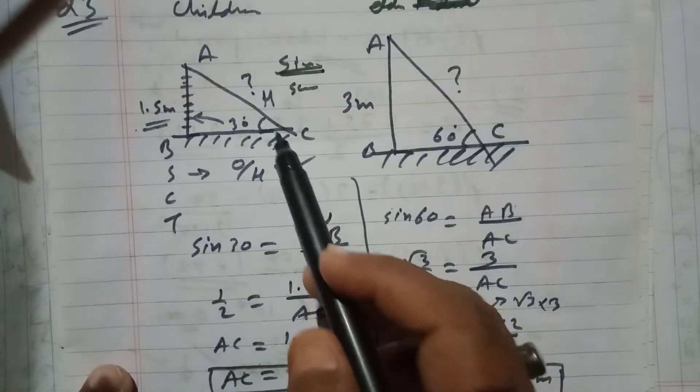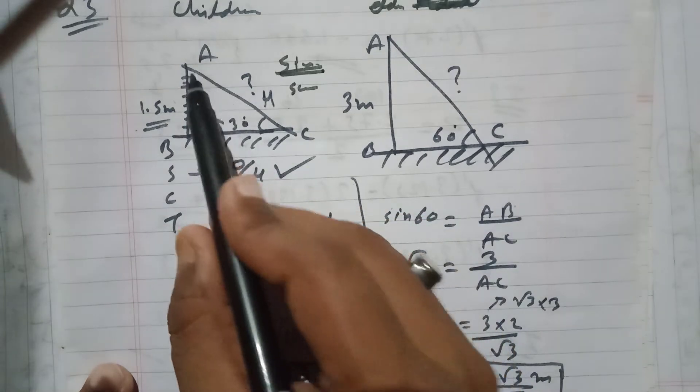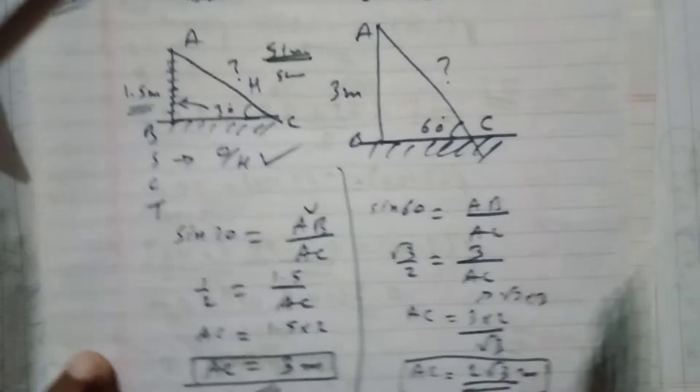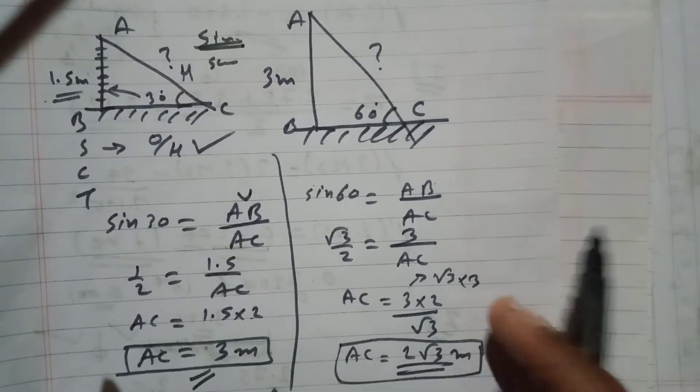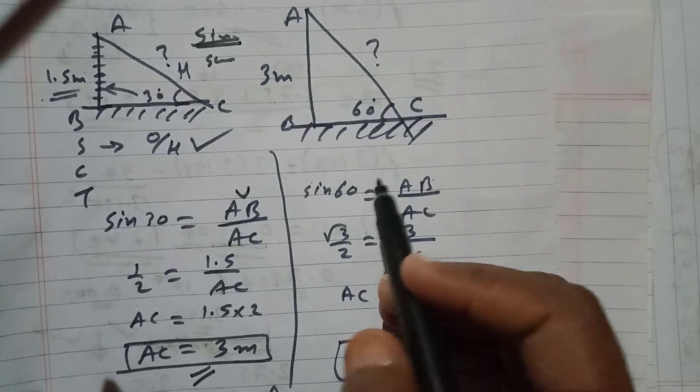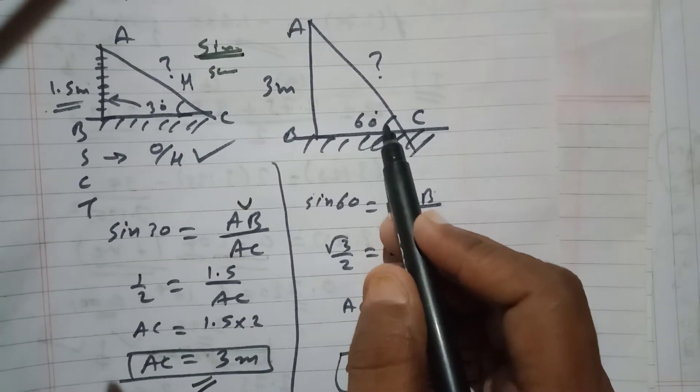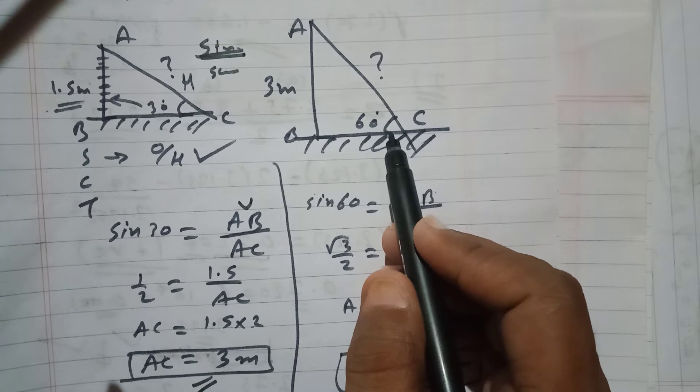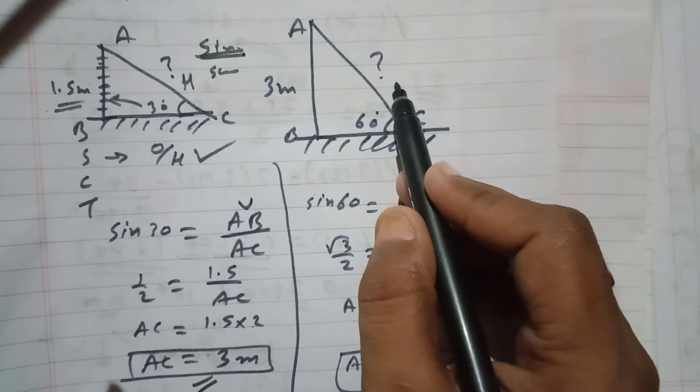So for the slide in case of children, the length of the slide is 3 meters. For the other case as well, we have to do the same way. In the case of elder children, the contractor constructed an angle of 60 degrees with the height of 3 meters. We need to find out the length of the slide.